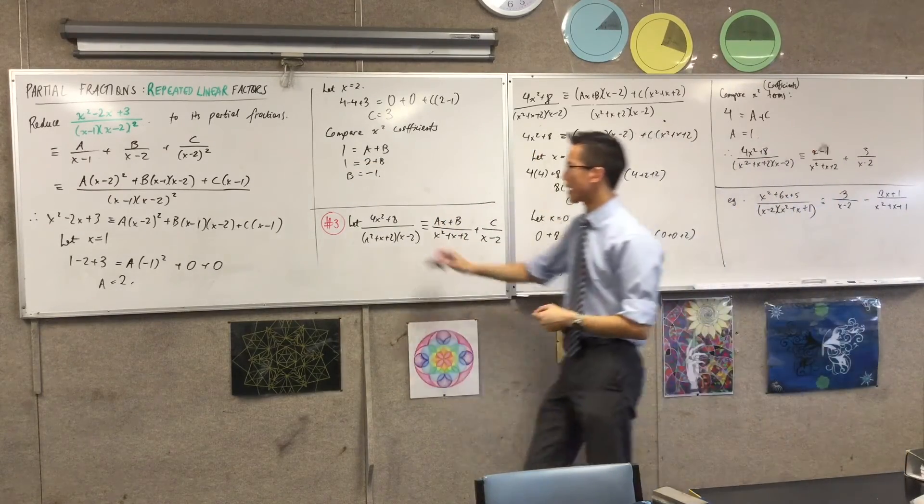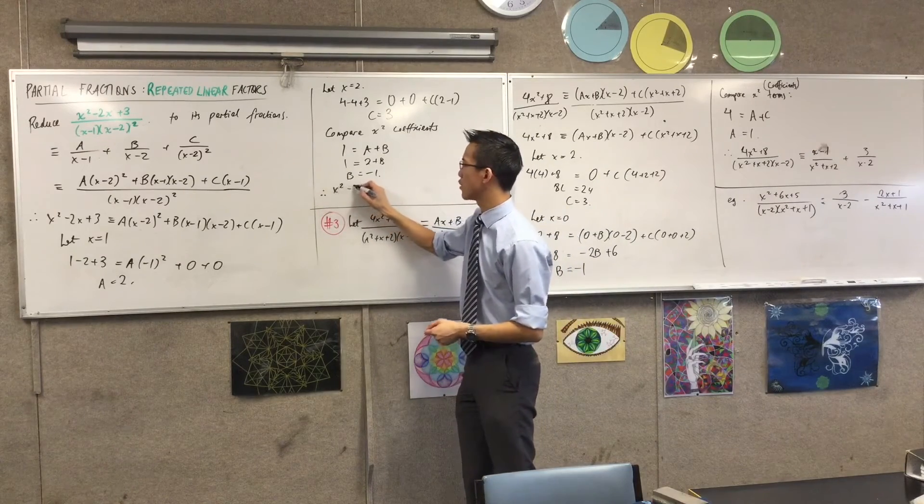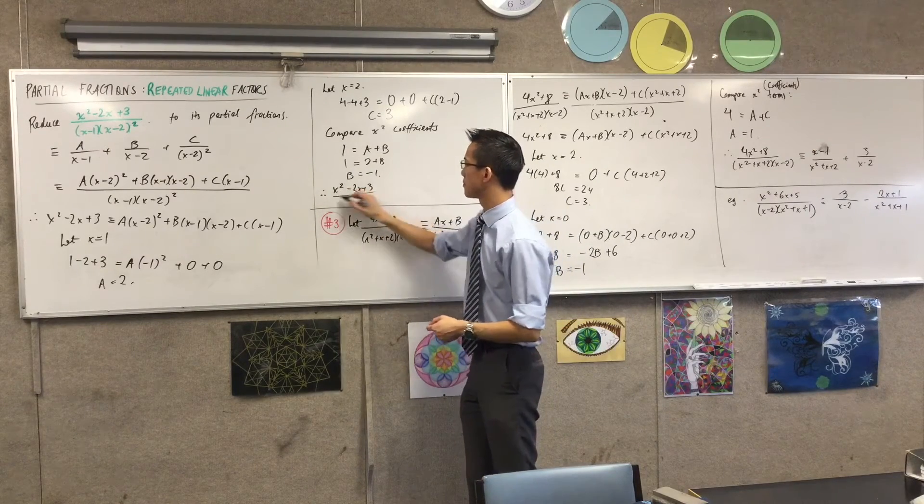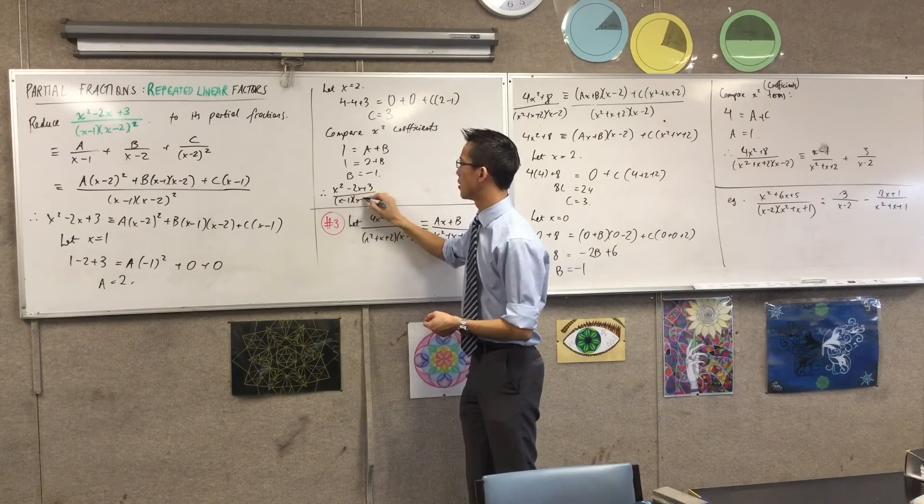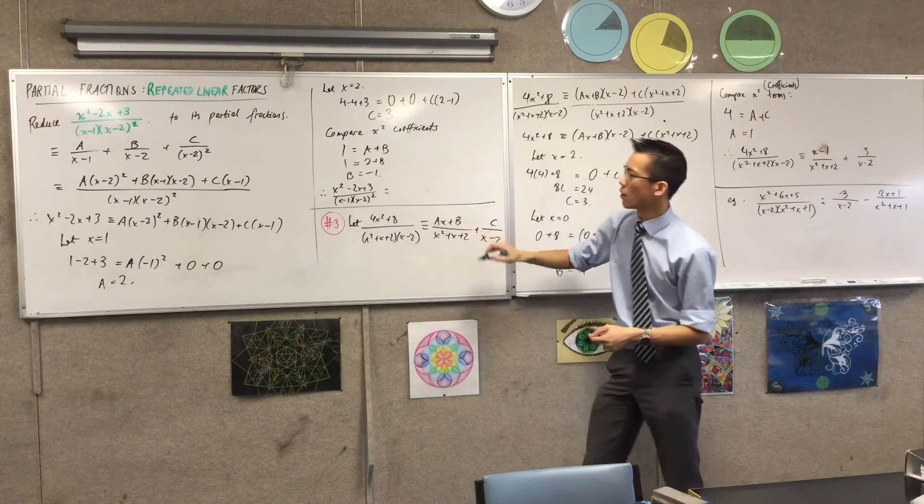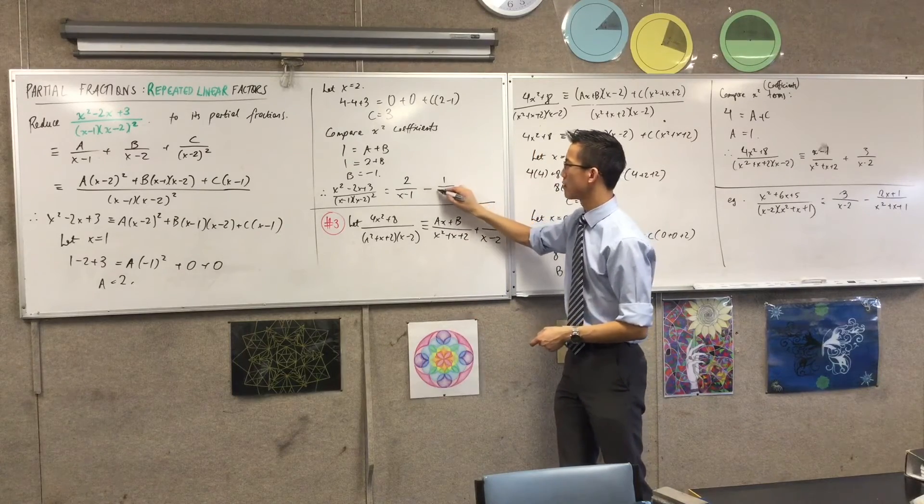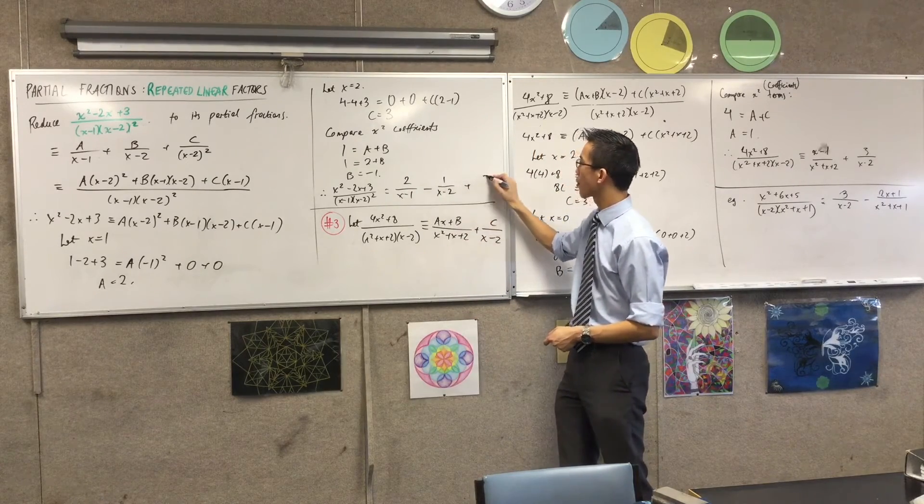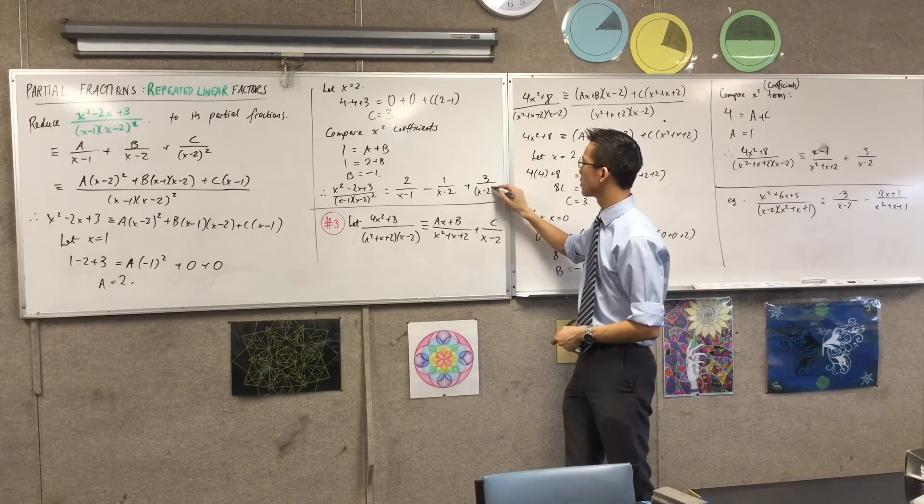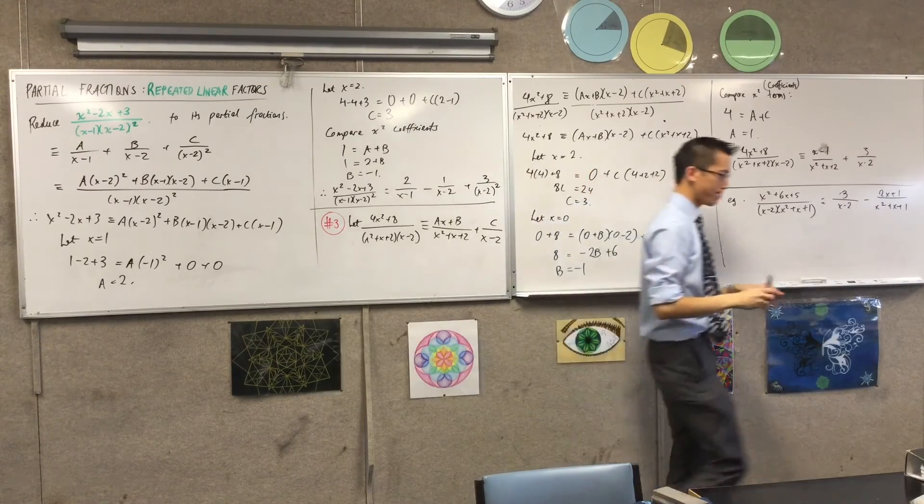So, you can see here, my conclusion is, therefore, the original fraction can be written in this form. Okay, A, I'm going to put the minus 1 there, and 3 of these guys.